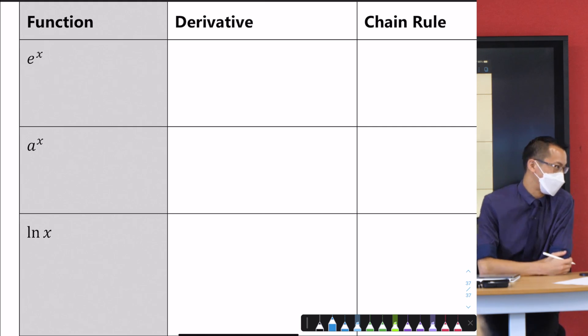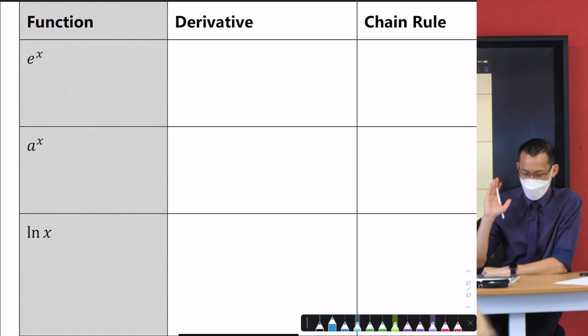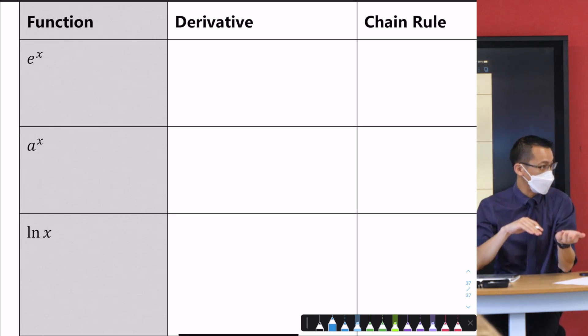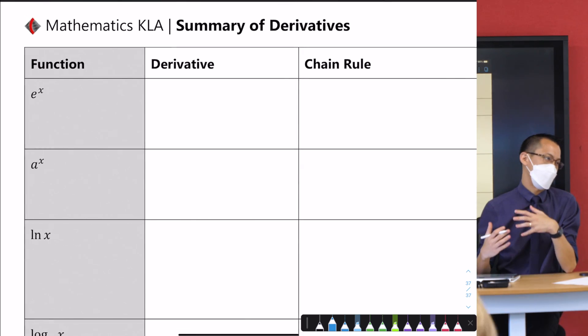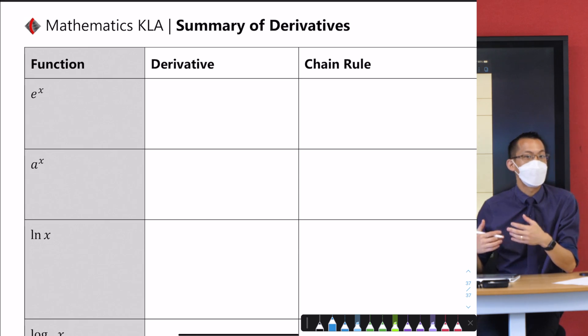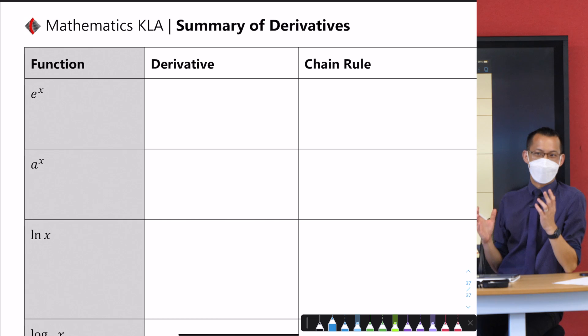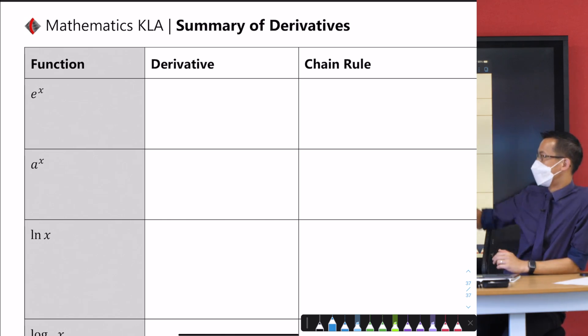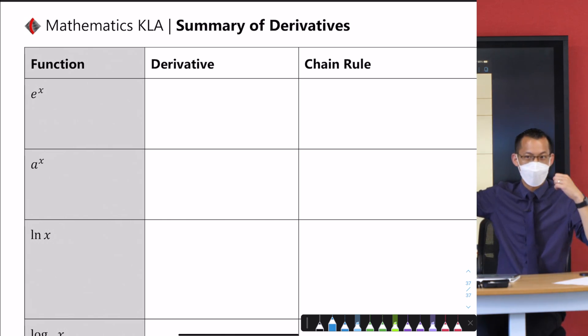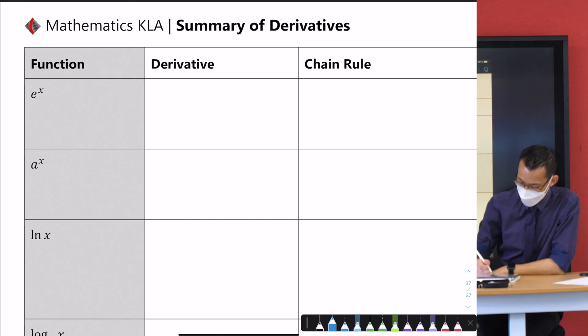I've started with the easy stuff, the stuff that is the kind of earliest that we looked at. We're just going to go through and say, well, what's the derivative for each one? And when we have a look at the chain rule, as we make this more complicated, what does it then look like? So no prizes. I want you all to say this with me on the count of three, the derivative of e to the x is just three, two, one, e to the x. Thank you. So let's just pop that over here in that first box.